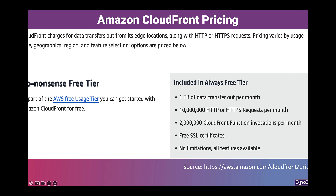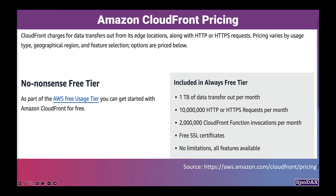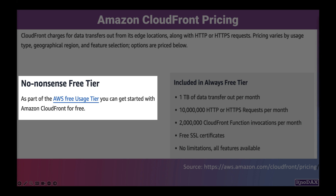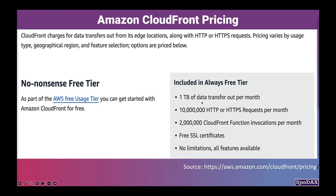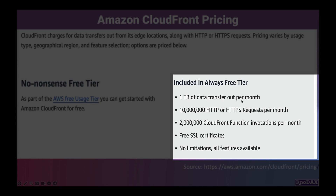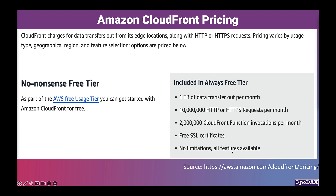CloudFront charges for data transfer out from its edge locations along with HTTP or HTTPS requests. Pricing varies by usage type, geographical region, and feature selection. Amazon CloudFront is also available in the free tier. In the free tier, you get 1 TB of data transfer out per month, 10 million HTTP or HTTPS requests, 2 million CloudFront function invocations, free SSL certificates, and no limitations. All features of CloudFront are available in the free tier.